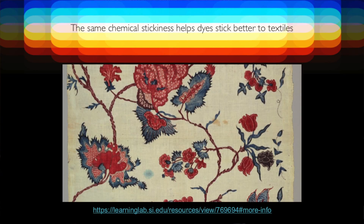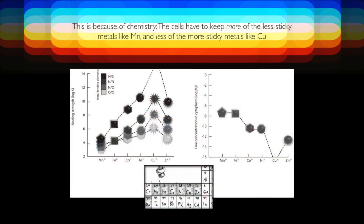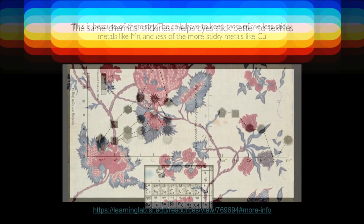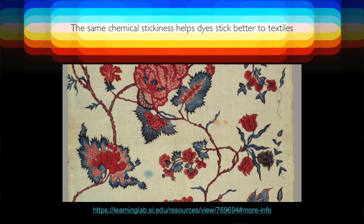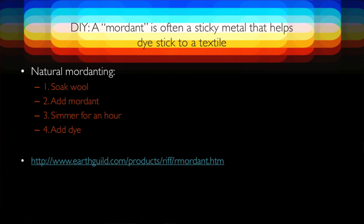Chemical stickiness also has relevance to textile art — it's how you get a dye to stick to a textile. When you use a metal to stick a dye to a textile, you're using what they call a mordant. The thing about mordanting is you're helping the dye to stick. A lot of mordants are sticky metals. If you're mordanting a piece of wool, you soak it, add your mordant, simmer for an hour, and add dye. You can do this yourself in your kitchen, and the dye will be brighter and stick more.